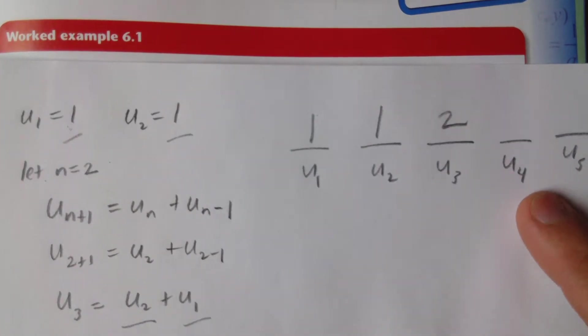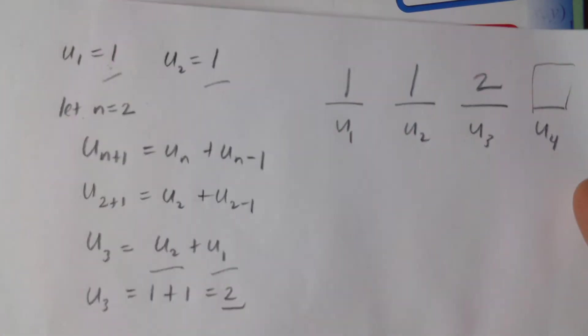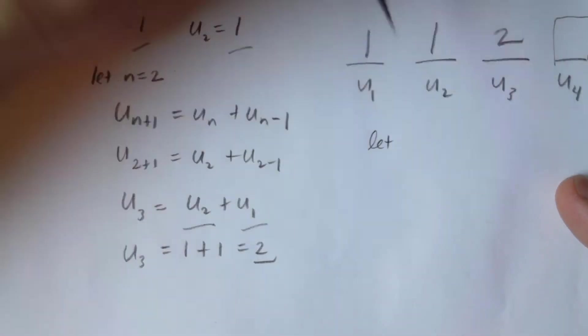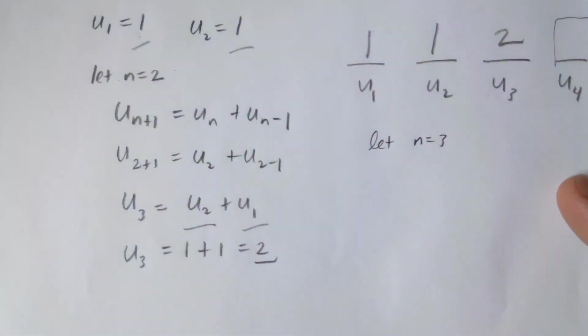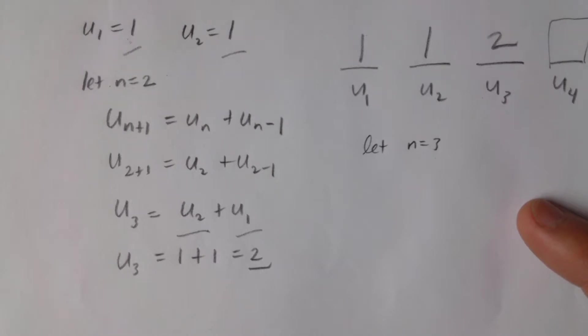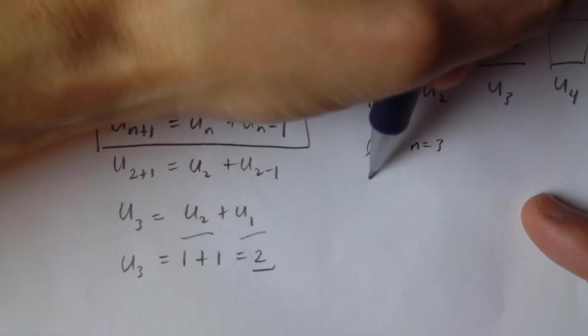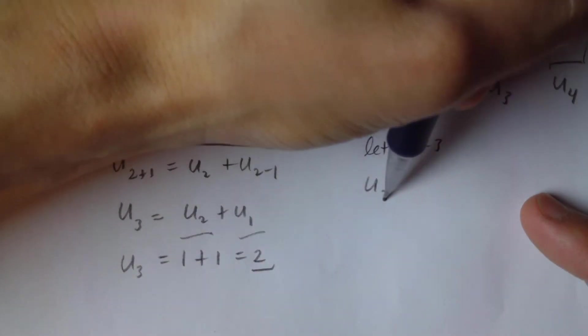Now when we're talking about figuring out u4, what is this value here? Let's let n equals 3. So when n is 3, according to the formula here, we have u to the n plus 1, which is 3 plus 1, that's the fourth term.